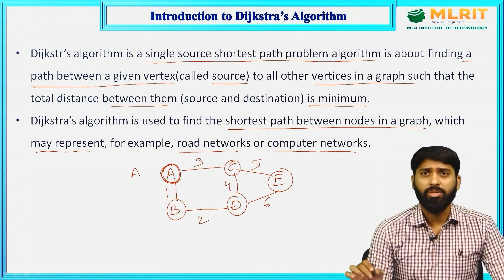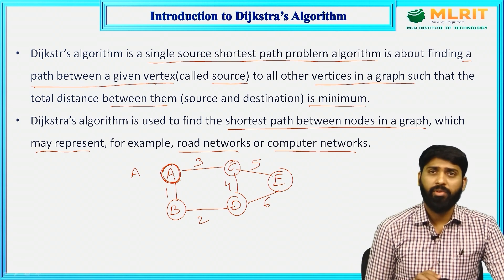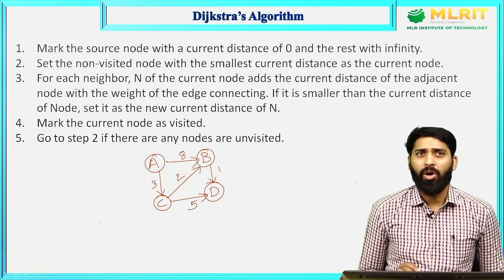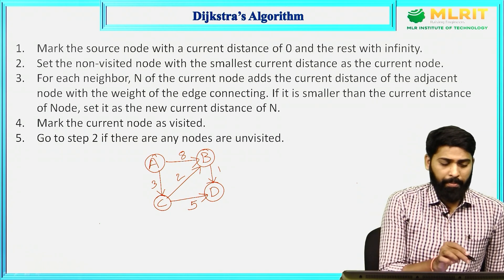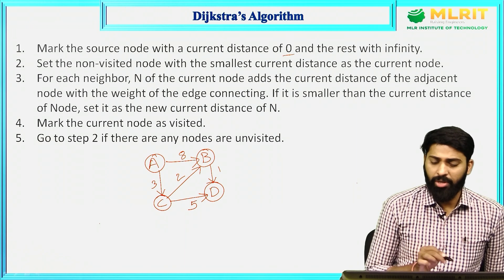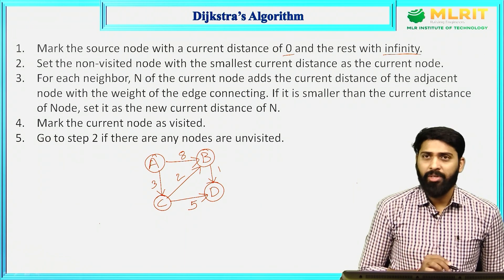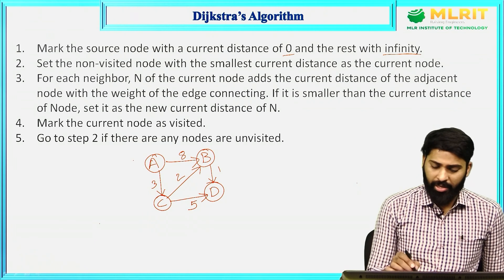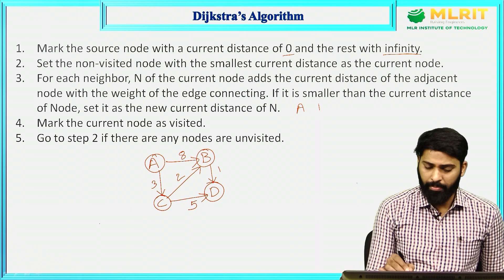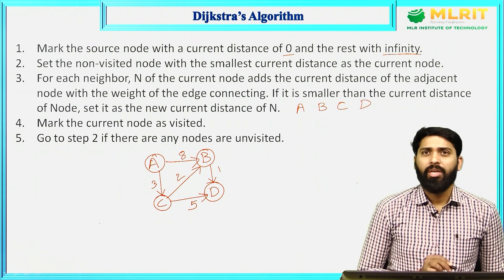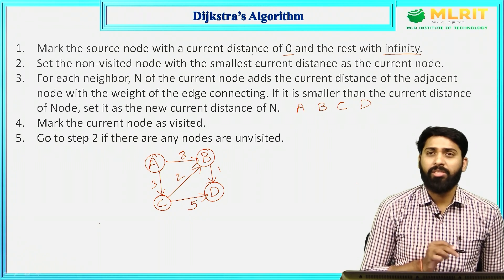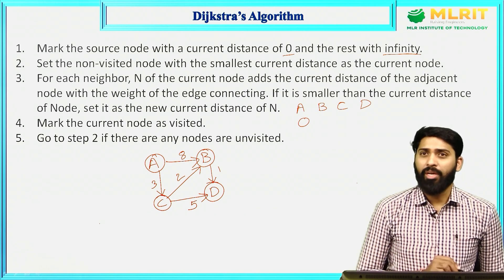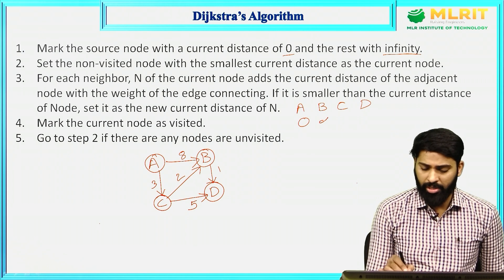Dijkstra's algorithm is used to find a path between a given vertex called source to all other vertices in a graph. Step 1: mark the source node with a current distance of 0 and the rest with infinity. In this graph, I select the source vertex as A. The remaining vertices are B, C, D. Mark the distance of A as 0 and the remaining vertices are initialized as infinity.